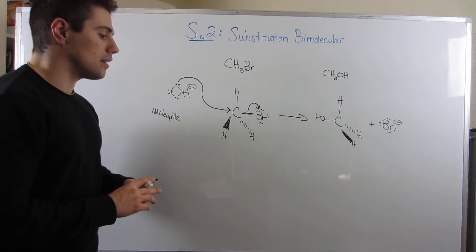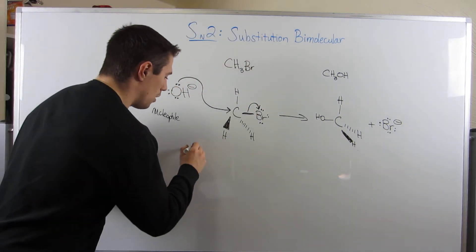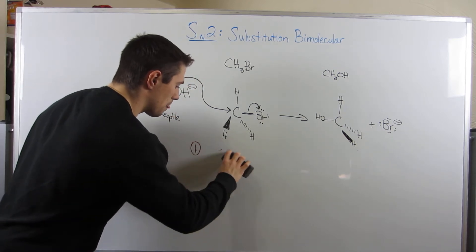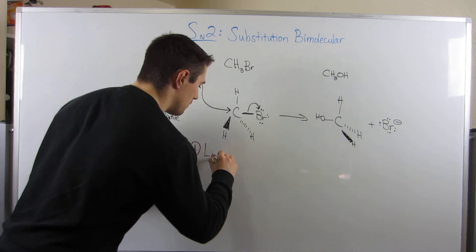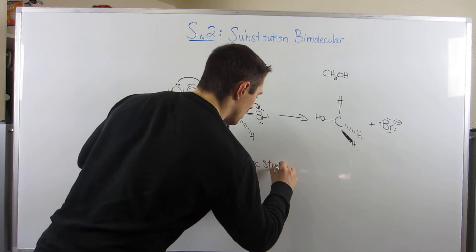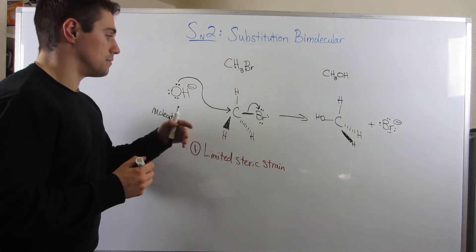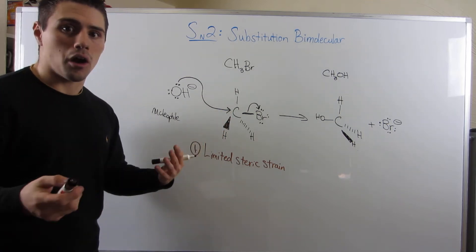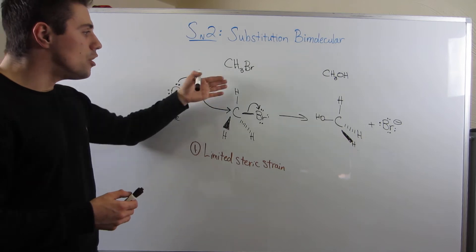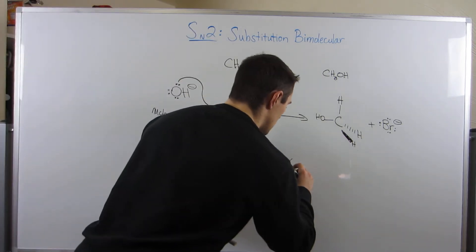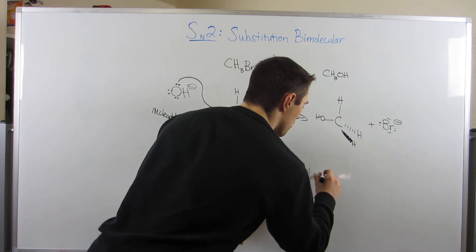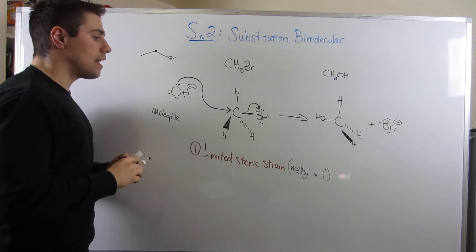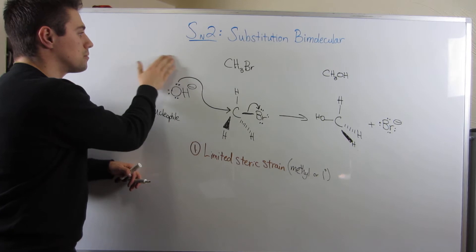Let me highlight things that are good for SN2. One thing you need is limited steric strain. Is this carbon sterically encumbered — surrounded by big groups that make it hard for OH to get in and attack? No. He's a methyl carbon; there are really no big groups at all. What we're looking for, for limited steric strain, is a carbon that is either methyl or primary, because then there's not a lot of steric strain and the OH will have no problem getting in to attack.